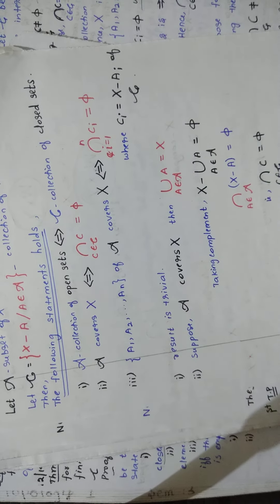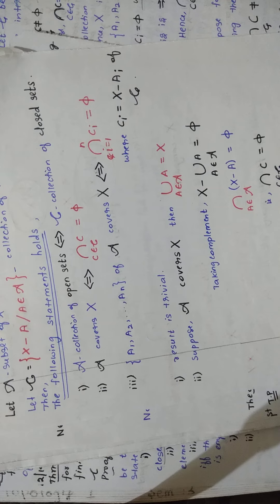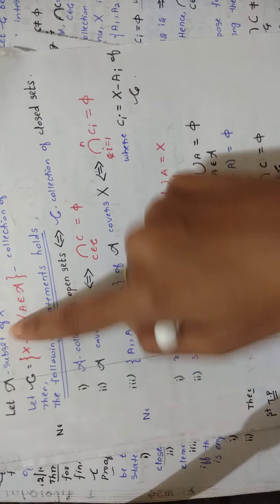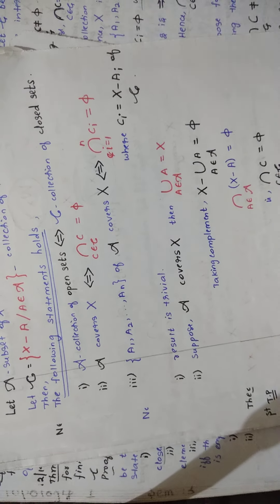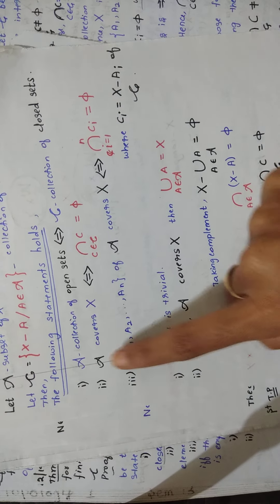First: script A is a collection of open sets if and only if script C is a collection of closed sets. This is obvious — if script A is a collection of open sets, its complement, script C, will be a collection of closed sets. The result is trivial.